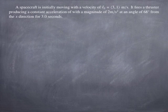So the idea is you've got a spacecraft initially moving with a certain velocity, it's a vector, fires a thruster producing a constant acceleration with a certain magnitude at a certain direction for a period, a certain period of time, three seconds.